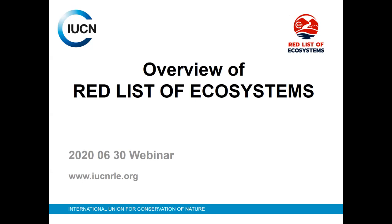We have about 87 governments that are members and then over 1,000 non-government members — NGOs as well as Indigenous peoples groups. We have 52 offices around the world and we work very closely across the different realms, biomes, and ecosystems.